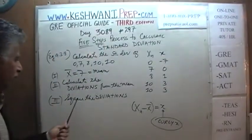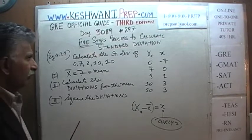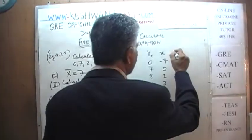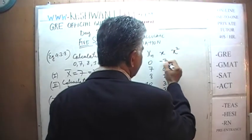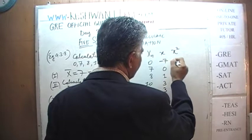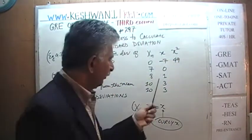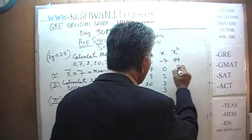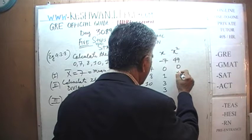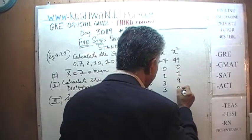Step three: square the deviations. Negative 7 squared becomes 49. 0 squared is 0. 1 squared is 1. 3 squared is 9, and the other 3 squared is 9.